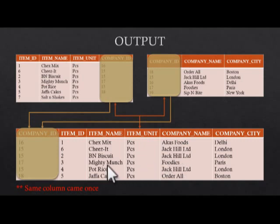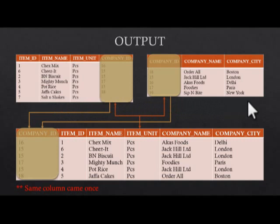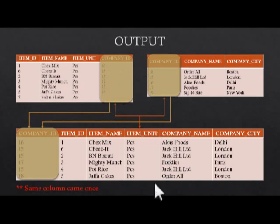In the result, only the values that are common in both tables are shown. For example, 'salt' and 'shakes' don't have any company_id on table 1, so they don't appear in the result. Also, although some company names exist on table 2, if their company_id is not present on table 1, they will not appear in the result either.